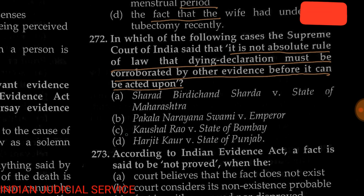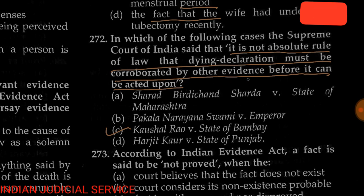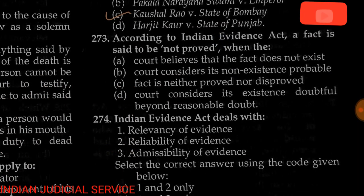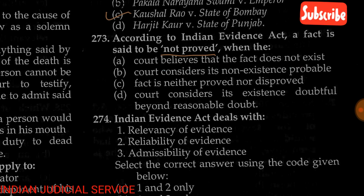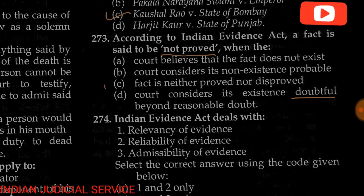In this question, the Supreme Court said that there is not an absolute rule of law that a dying declaration must be corroborated. For question number 273, the answer is option C: the fact is neither proved nor disproved — meaning 'not proved' means the fact is neither proved nor disproved, and the court considers its existence doubtful beyond a reasonable doubt.